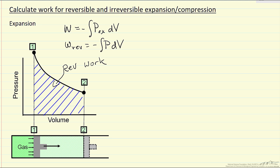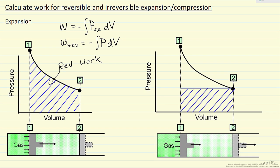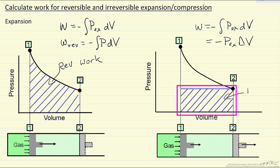Now let's look at an irreversible process in contrast. There are essentially an infinite number of ways, but here we expand where the final pressure is P2. Work equals P_external times dV, and we set the external pressure equal to the final pressure. This area is the irreversible work. Notice the irreversible work is smaller — we have less resisting force. This is of course only one of many ways we could carry out an irreversible process.